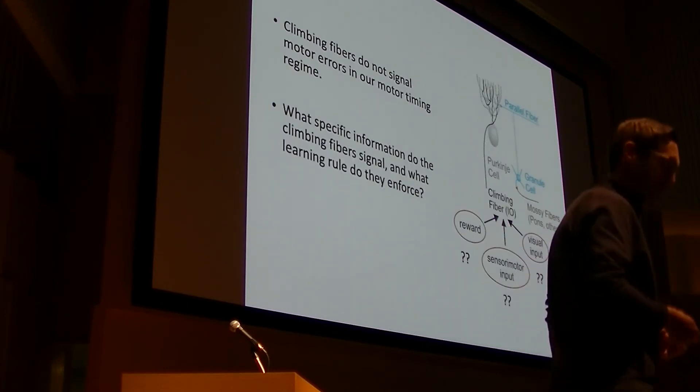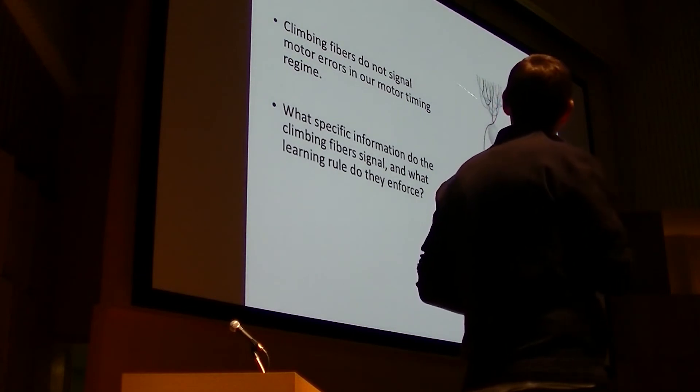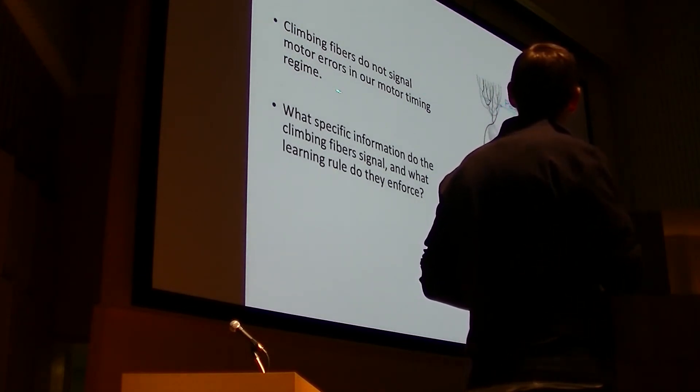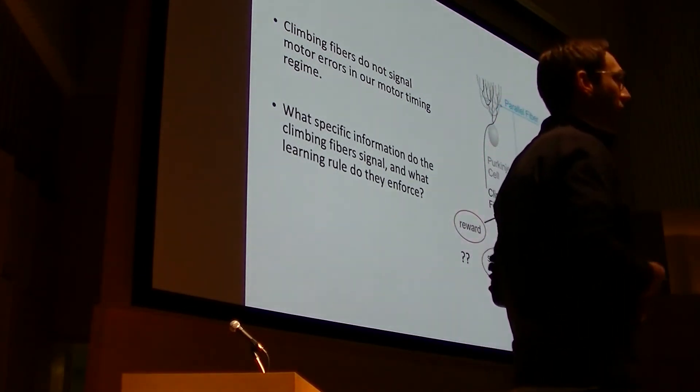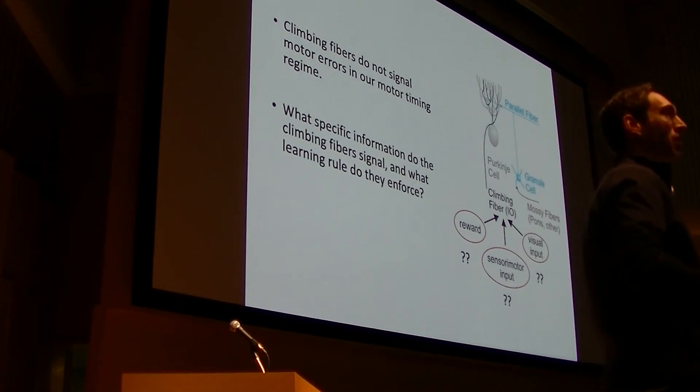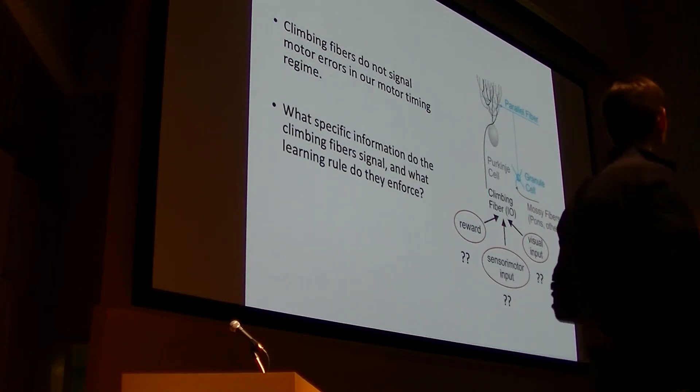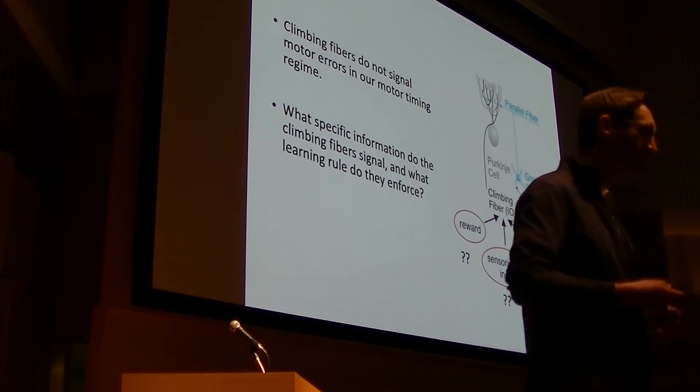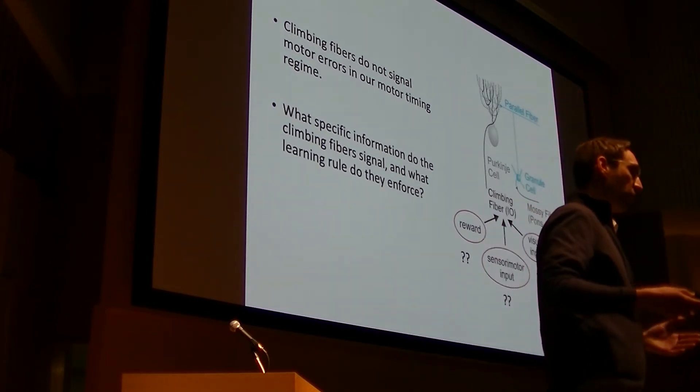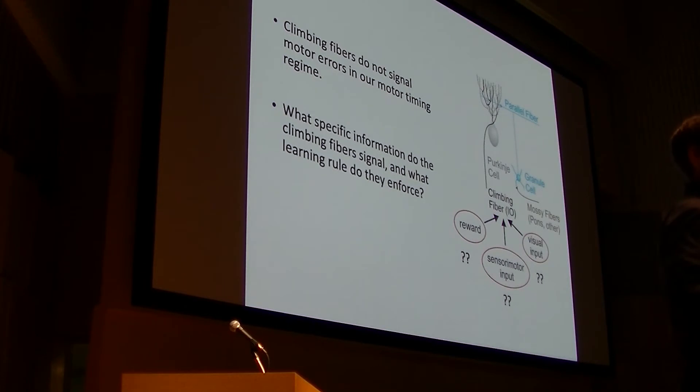Okay. So at this point, I think we've shown that the climbing fibers don't signal motor errors. And now the job becomes to figure out what they do signal. And at this point, we started to think that perhaps we're seeing some sort of reward prediction signal because, of course, in our task, a correctly timed movement is an accurate predictor of upcoming reward. And so we went back to the data and looked for evidence to test this hypothesis.